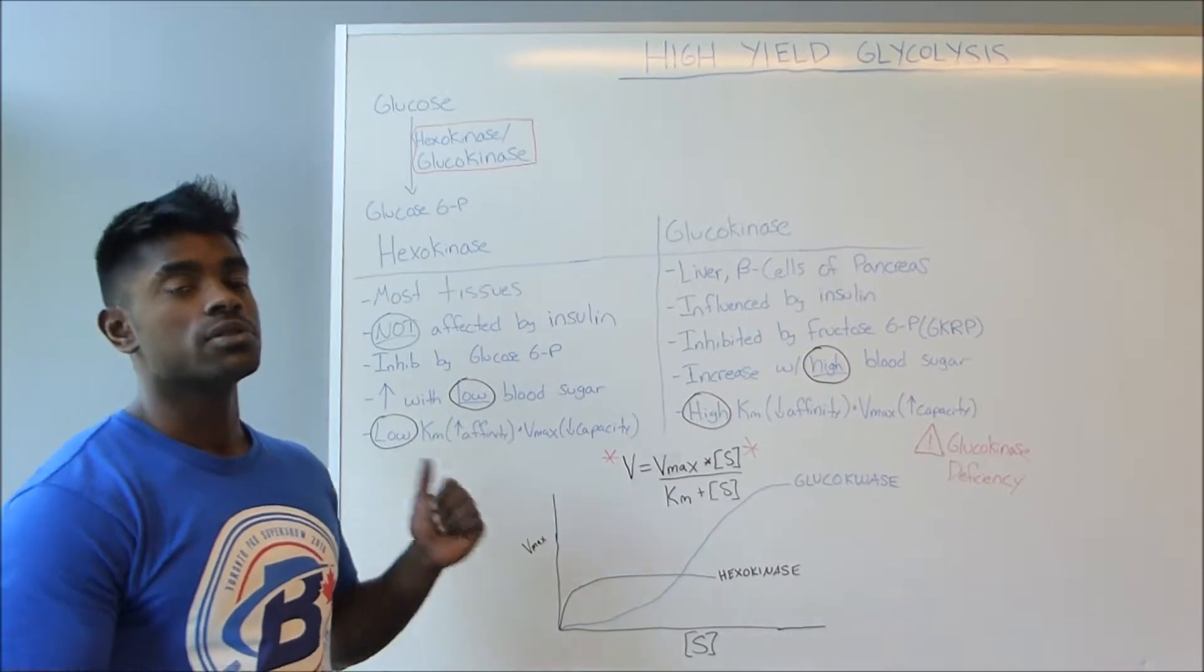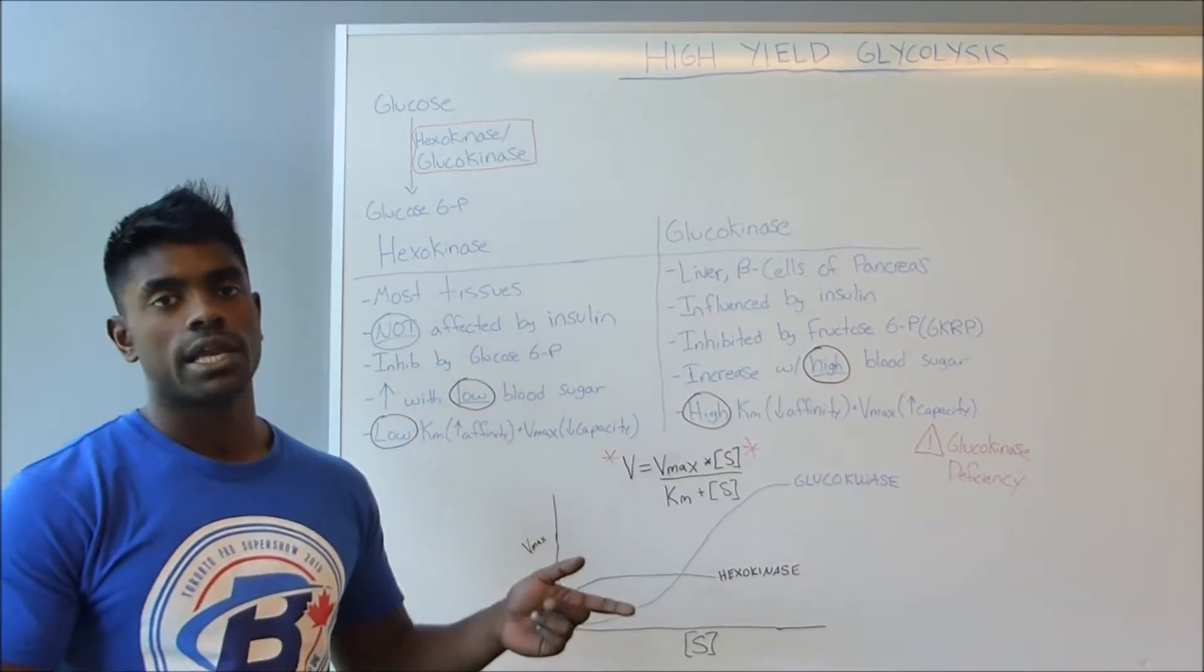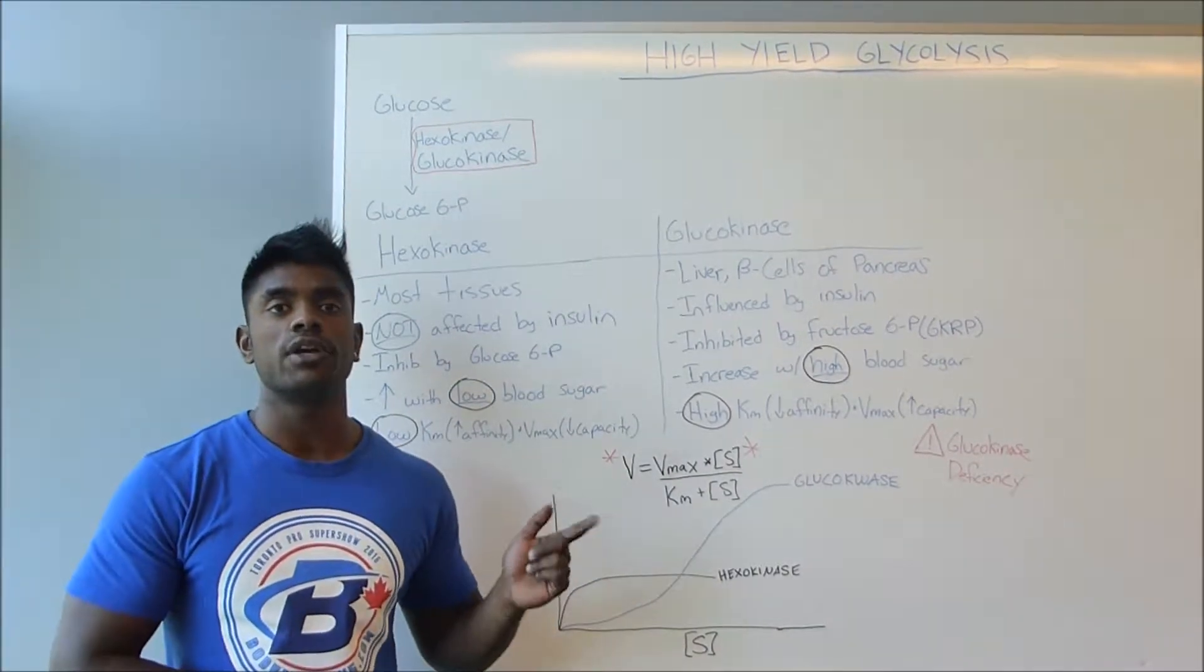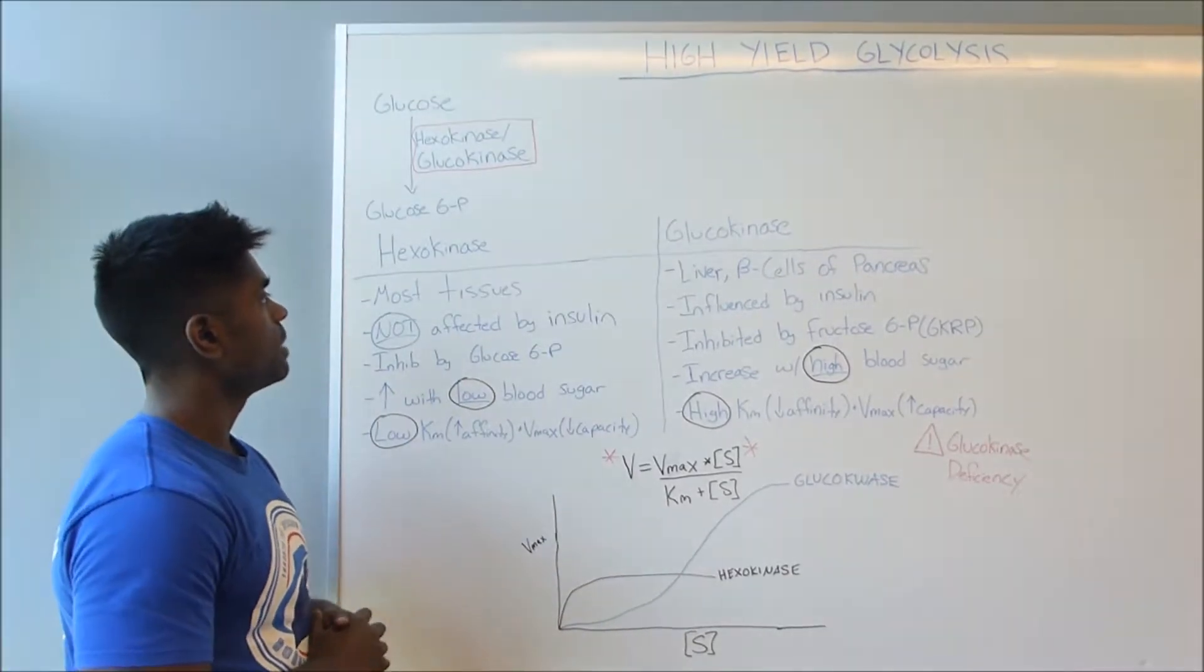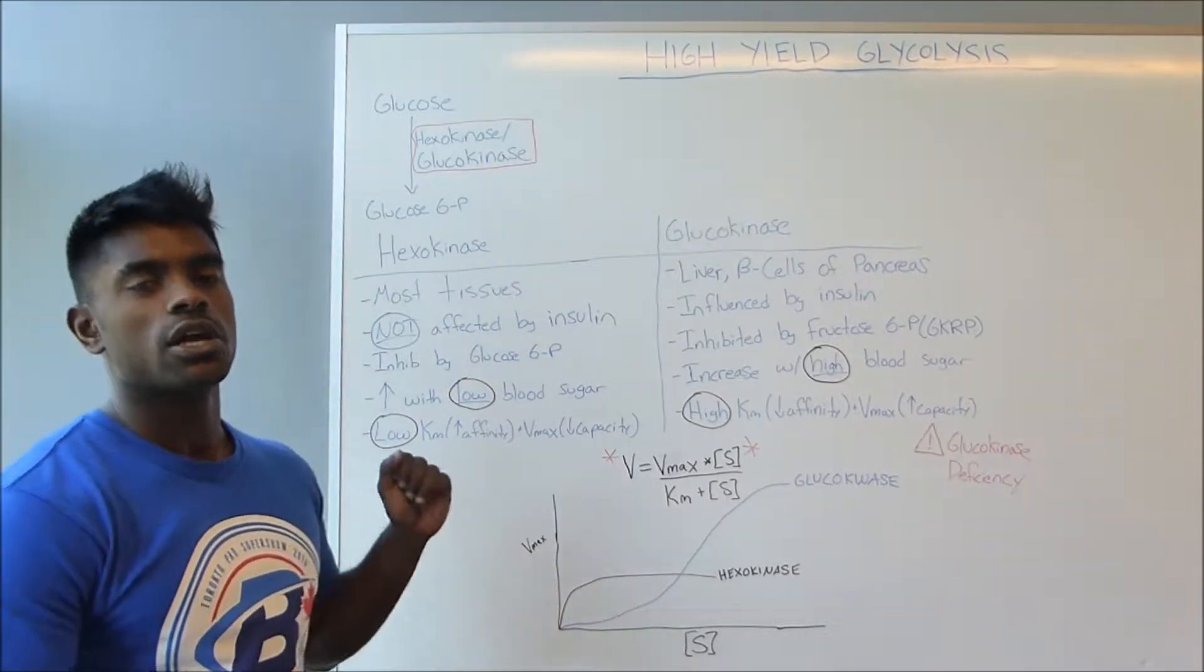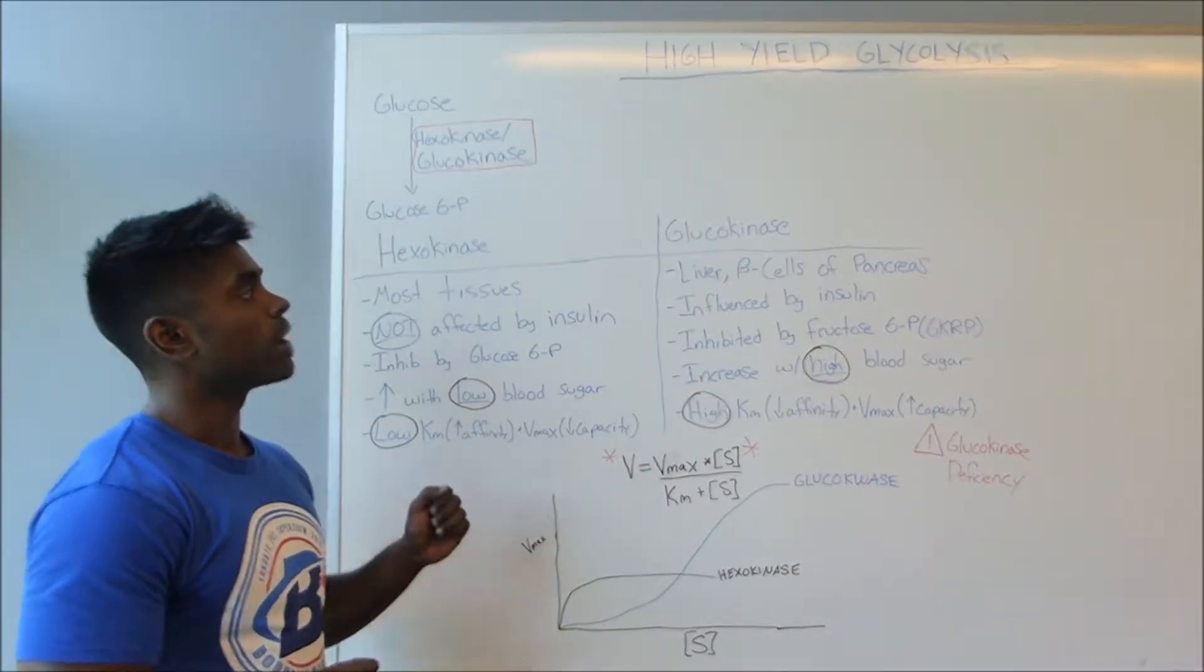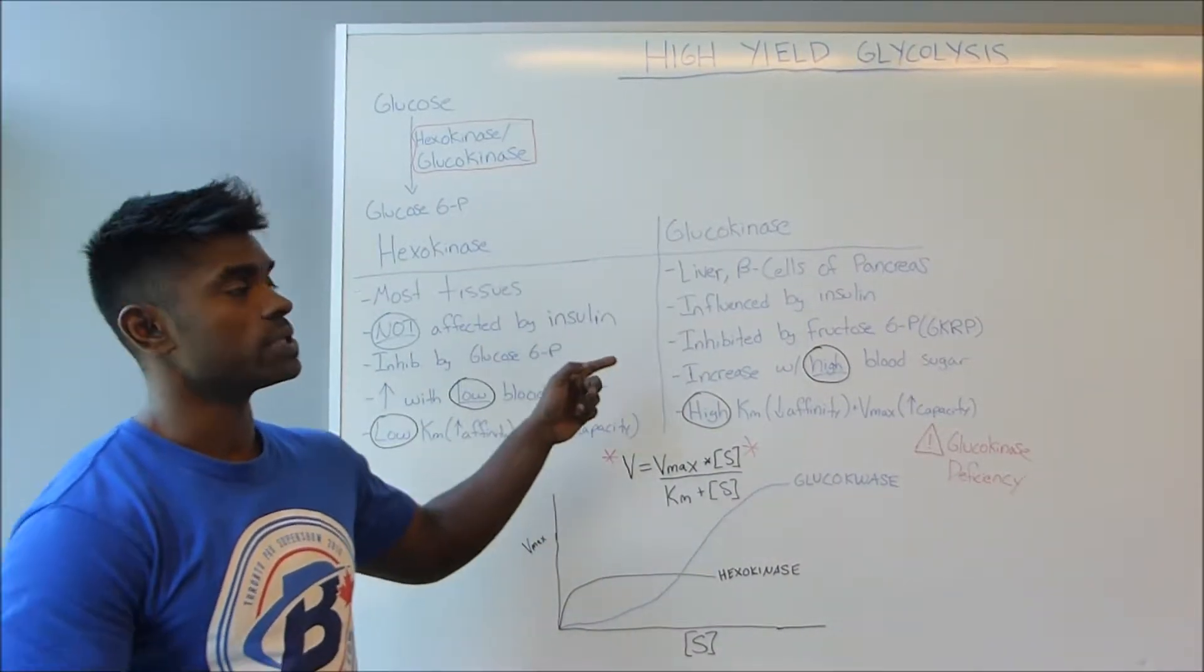So hexokinase is found in most of the tissues, whereas glucokinase is found in the liver and in the beta cells of the pancreas. Knowing this, it makes sense that hexokinase is not going to be affected by insulin, whereas glucokinase is influenced by insulin.